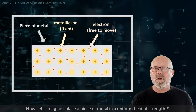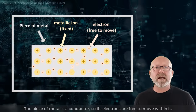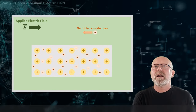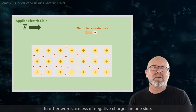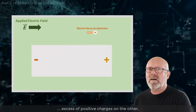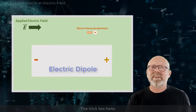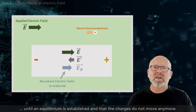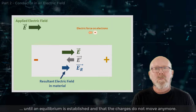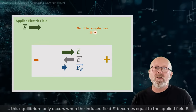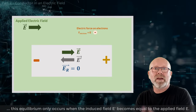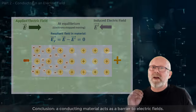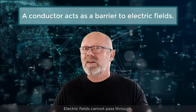Now let's imagine I place a piece of metal in a uniform field of strength E. The piece of metal is a conductor, so electrons are free to move within it. Subjected to an electric field, the electrons will rush towards one end, leaving the other end with a deficit of electrons. In other words, excess of negative charges on one side, excess of positive charges on the other — you get an electric dipole. This new dipole generates its own electric field E' that opposes the applied electric field E until an equilibrium is established and the charges do not move anymore. Because the charges are totally free to move, this equilibrium only occurs when the induced field E' is equal to the applied field E. So the resultant field in the material is zero — the applied field is cancelled. A conducting material acts as a barrier to electric fields; electric fields cannot pass through.